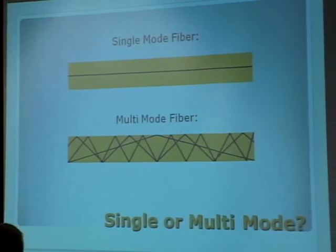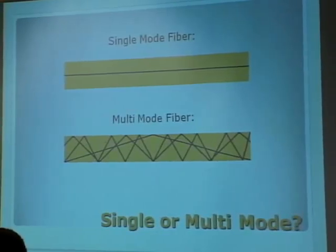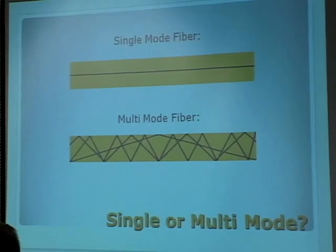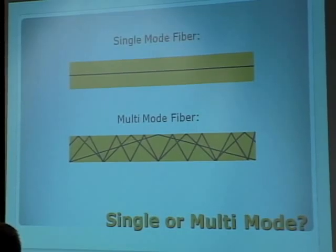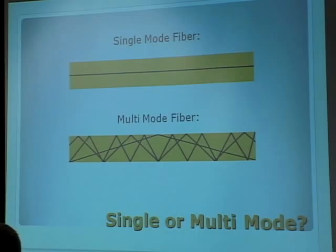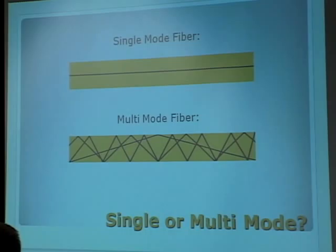We can also build this beam splitter not in free space but using optical fibers. There are two types of optical fibers that exist. The first is a single-mode fiber, where only one mode of light translates down the optical fiber. The other type is a multimode fiber, where a variety of modes — up to thousands of modes of light — can transmit down each of these fibers. So the beam splitter can be constructed by sending those beams of light via a single-mode fiber or via a multimode fiber.